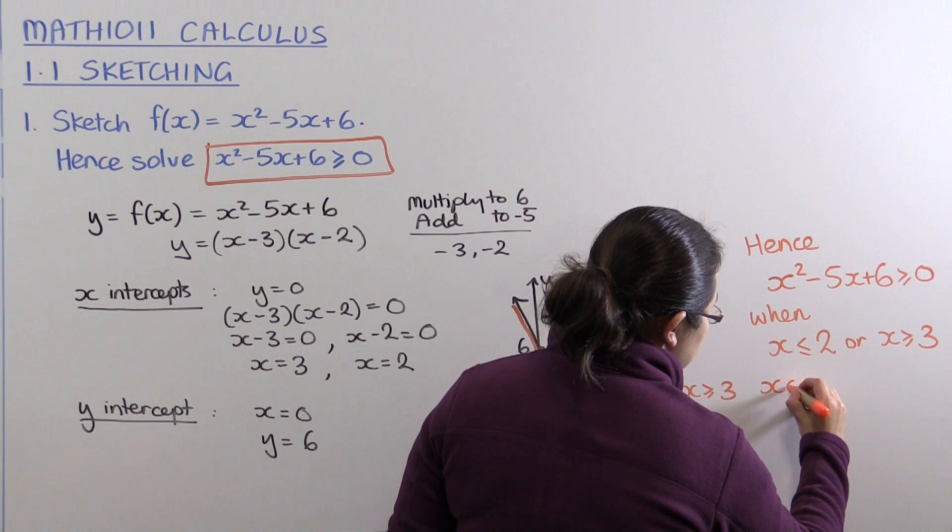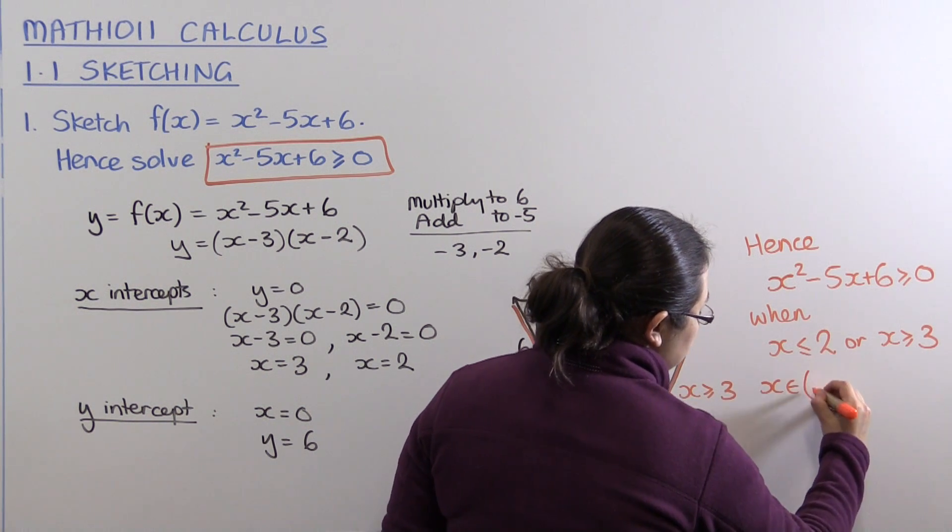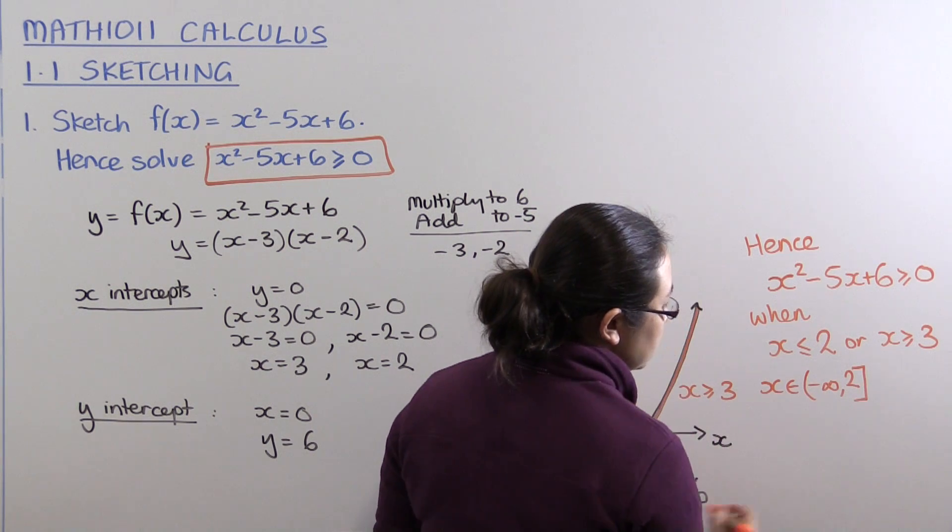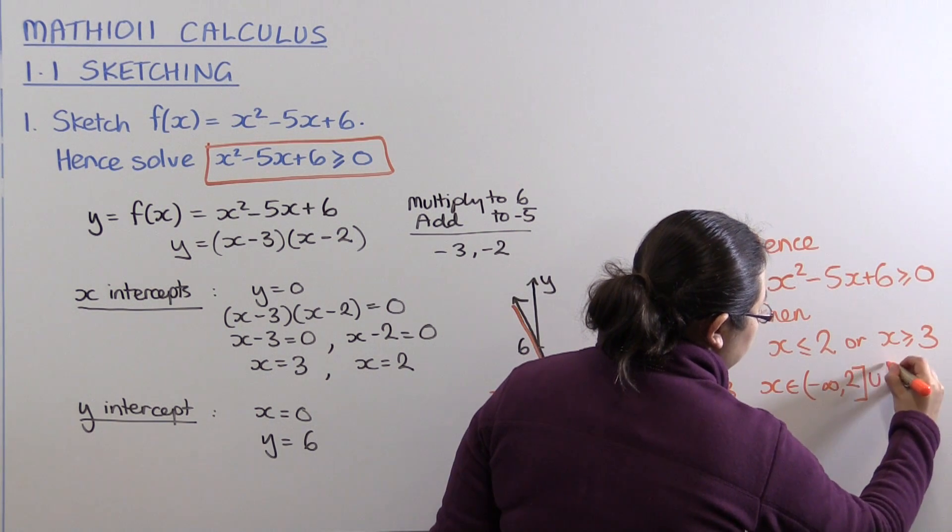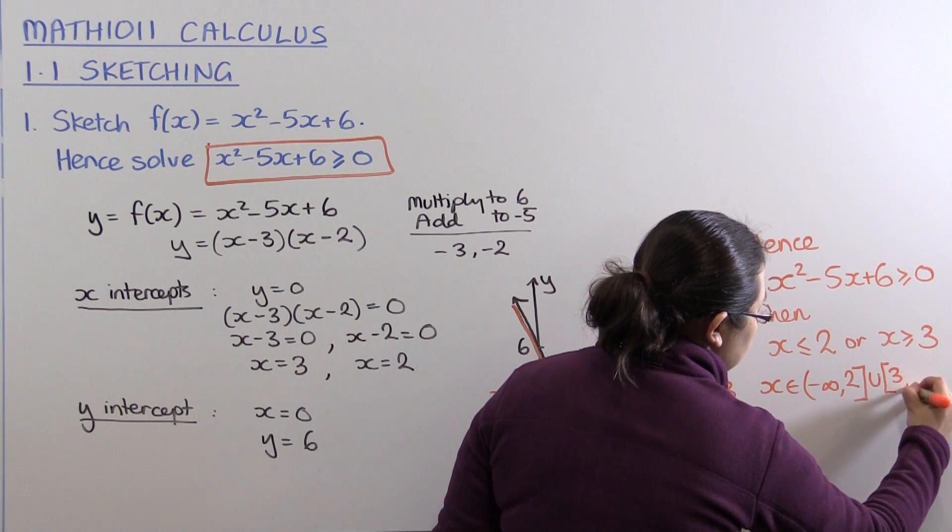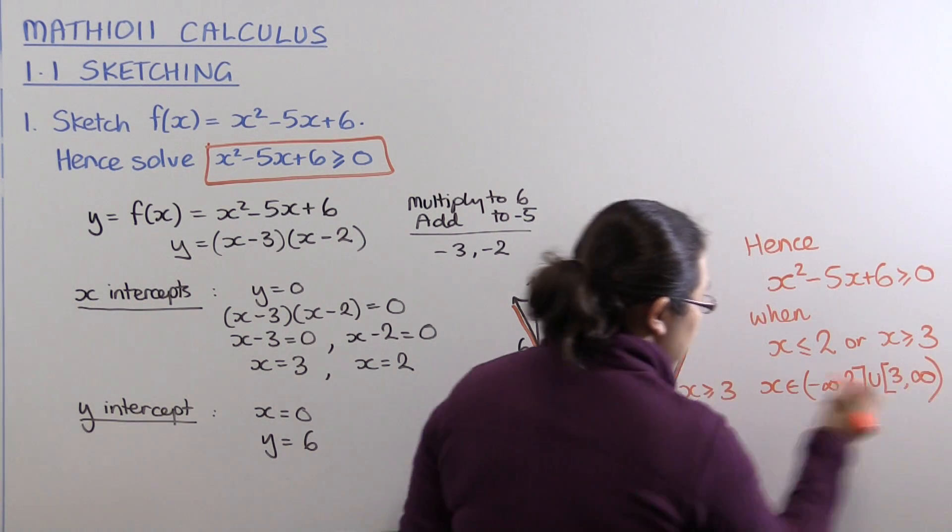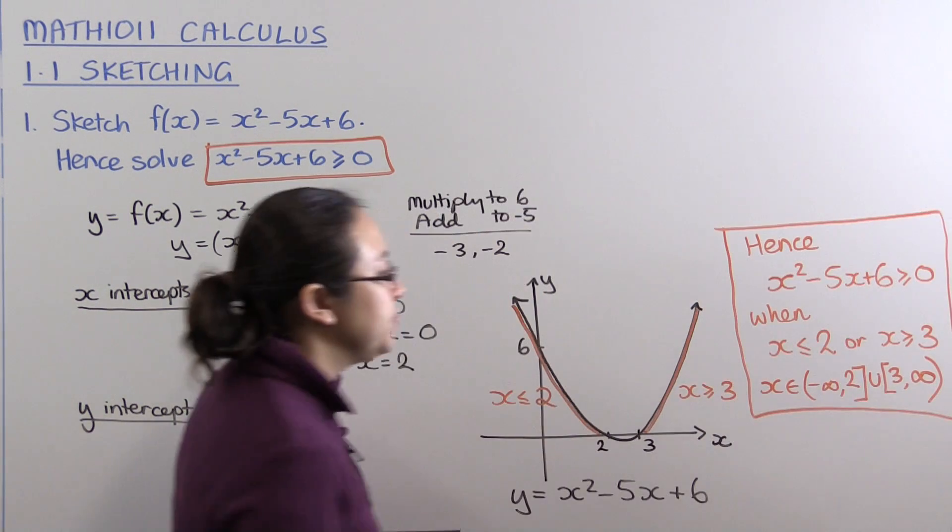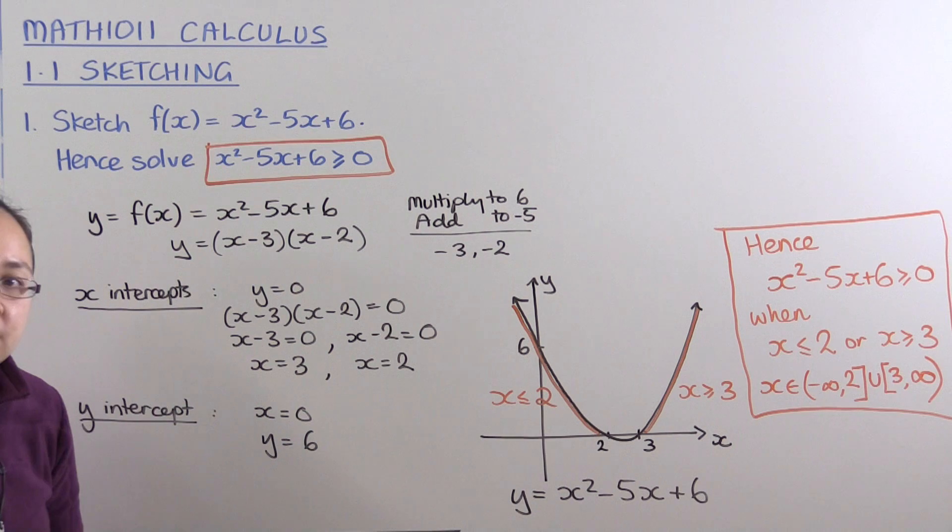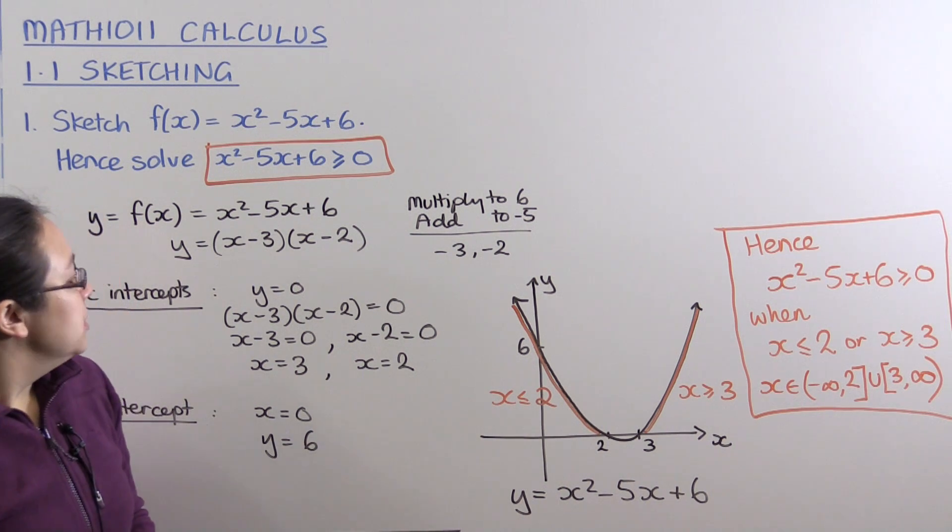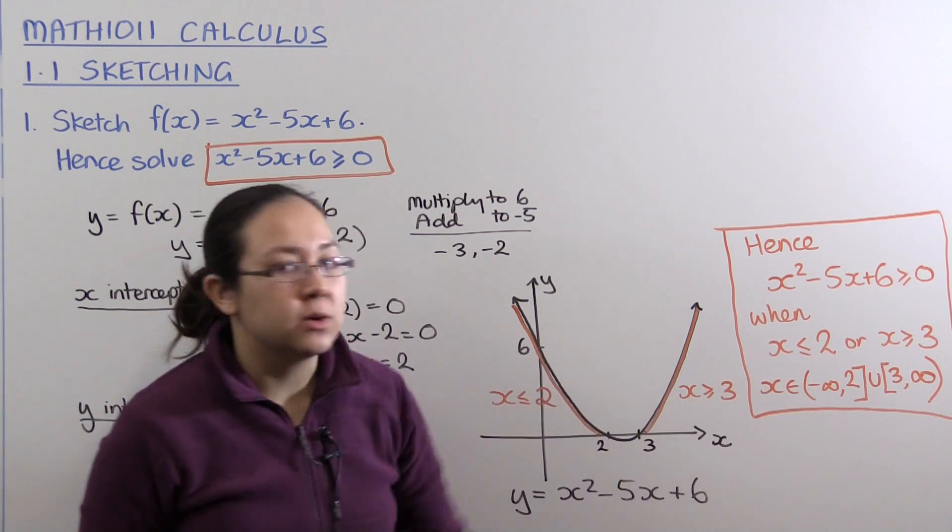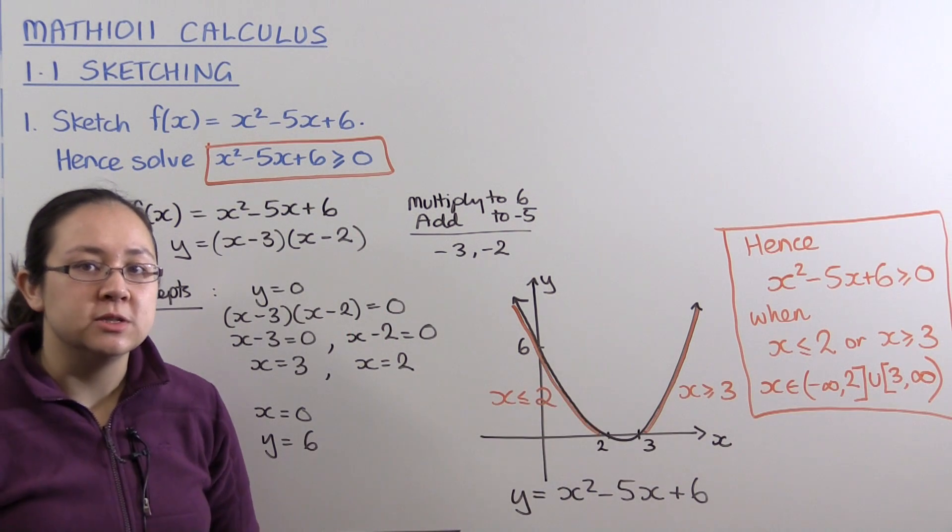x is in the set (-∞, 2] ∪ [3, ∞). Less than or equal to 2 means from negative infinity up to 2 including 2, or from 3 including 3 up to infinity. So there we have a parabola sketched and a quadratic inequality solved using that sketch.